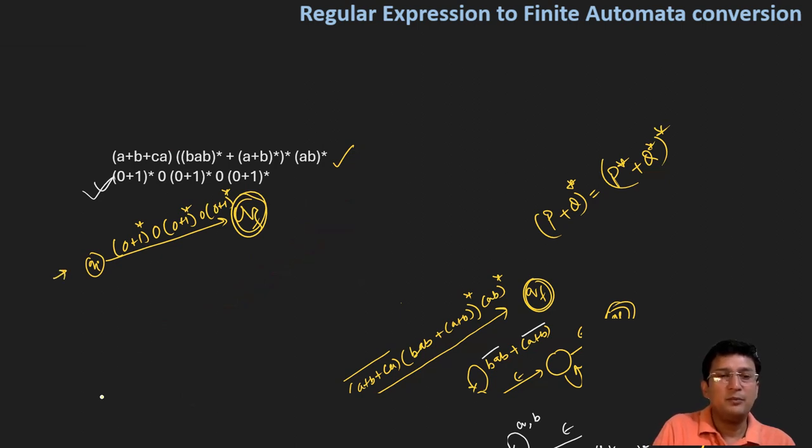Starting from the initial state, we have 1, 2, 3, 4, 5 components to handle in this expression.